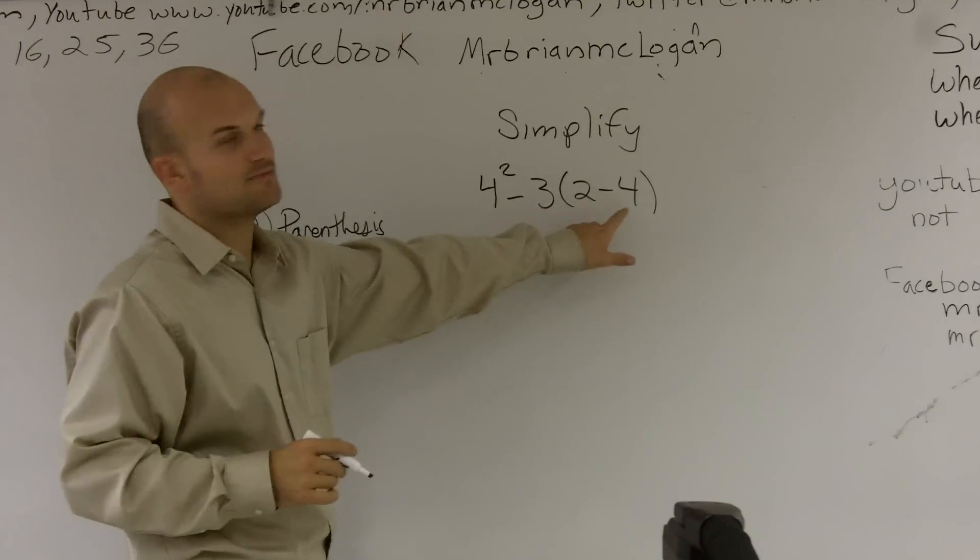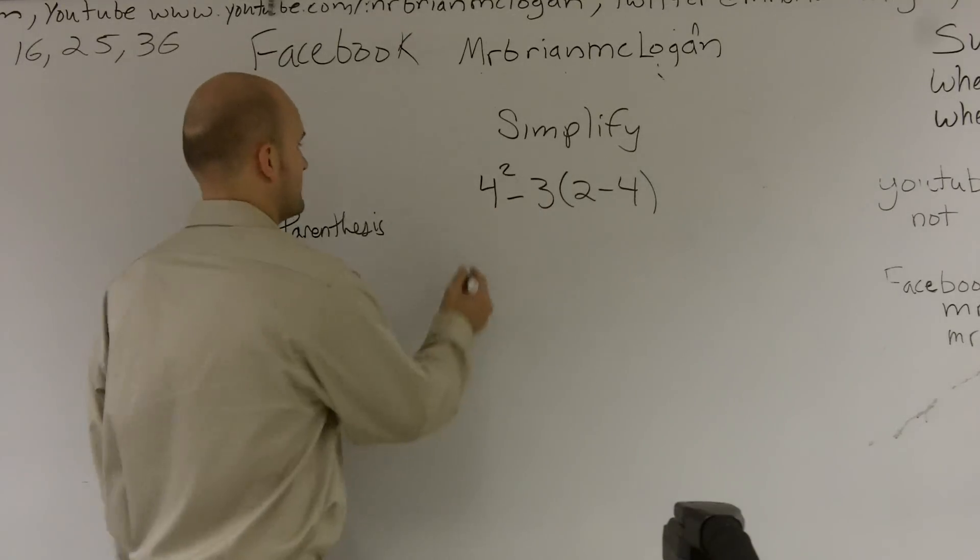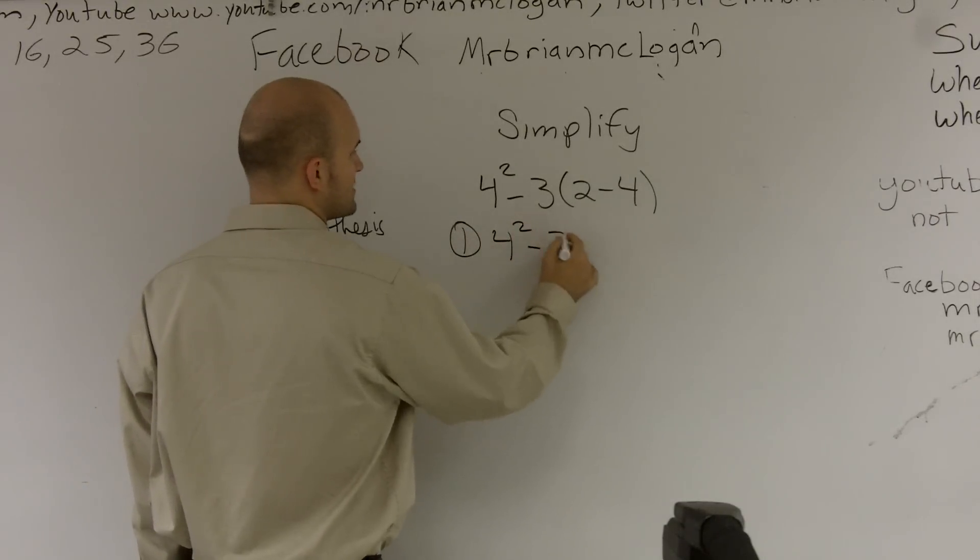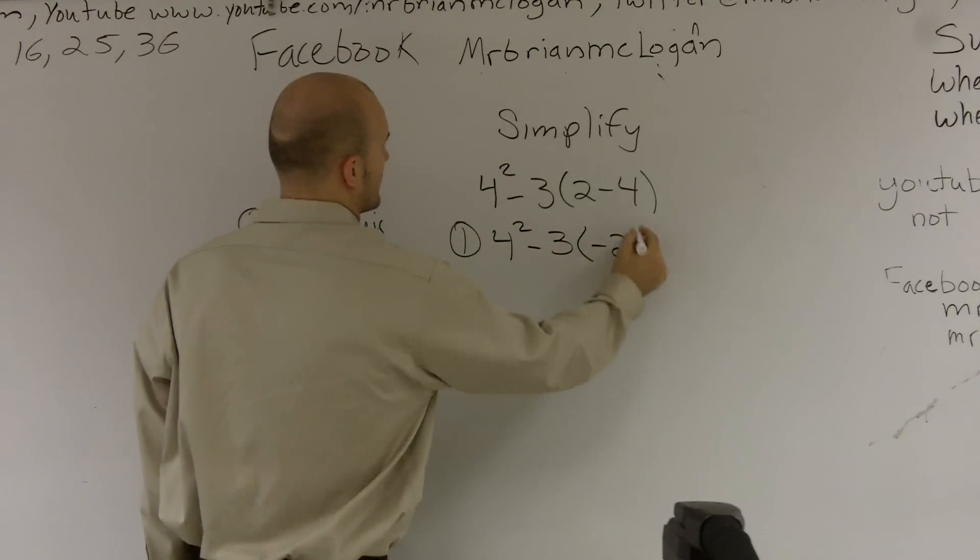So here, inside these parentheses, I can do 2 minus 4. So I'll get 4 squared minus 3 times a negative 2.